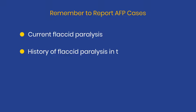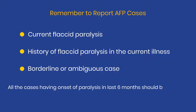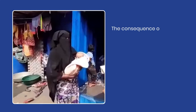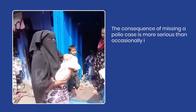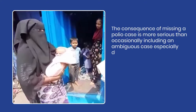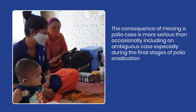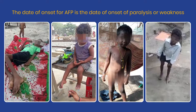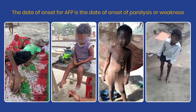Remember to report all AFP cases having current flaccid paralysis, or history of flaccid paralysis in the current illness, or borderline or ambiguous presentations. All cases having onset of paralysis in the last 6 months should be reported. The consequence of missing a polio case is more serious than occasionally including an ambiguous case, especially during the final stages of polio eradication. The date of onset for AFP is the date of onset of paralysis or weakness.